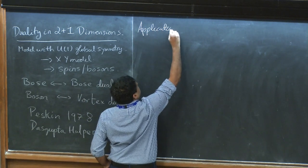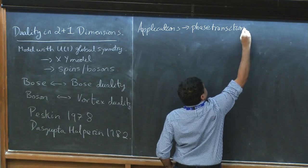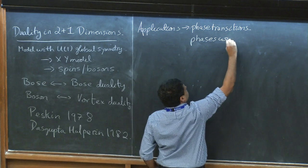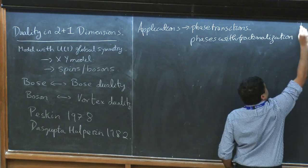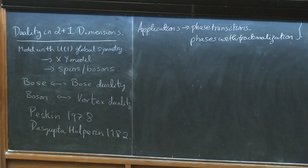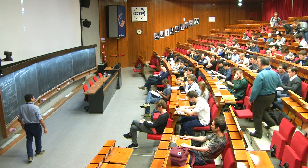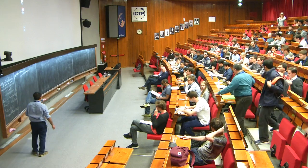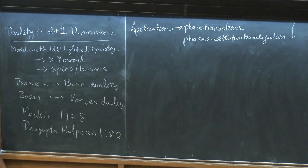This duality allows you to understand phase transitions, and even some phases, in a simple way. It has played a very important role in understanding certain kinds of phase transitions that were not accessible using more conventional techniques like the epsilon expansion. It also gives you a very powerful tool to look at new kinds of phases. Half my career I've just worked with this duality — it really opens up a completely new world, a different way of looking at things that are extremely hard if you insist on working with the original boson degrees of freedom.